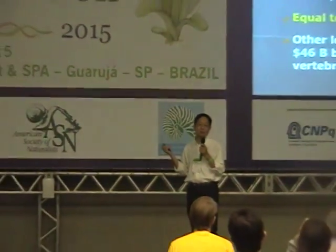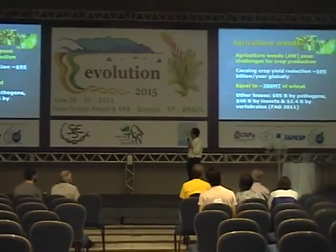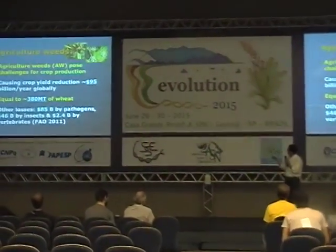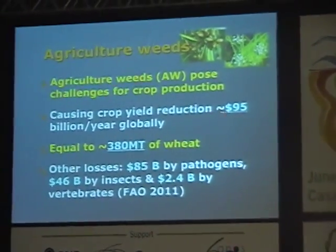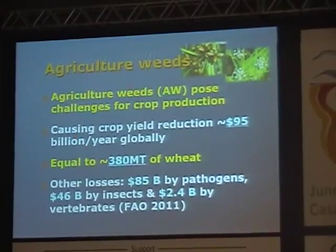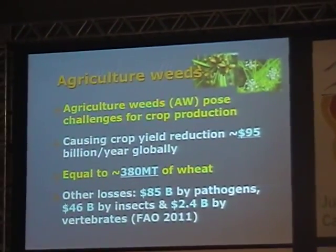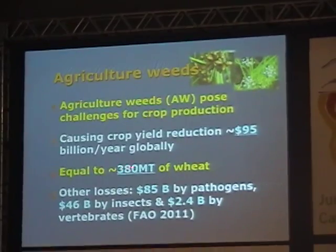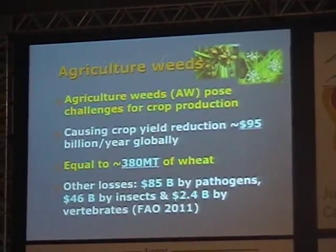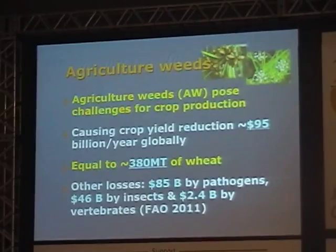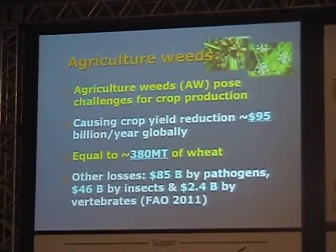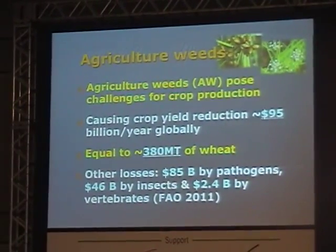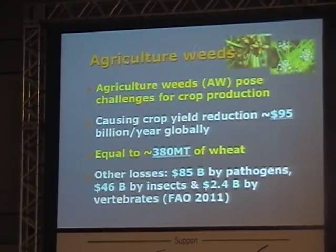Agricultural weeds are really very important — it's a great challenge for agricultural production. By estimation, every year the damage caused by agricultural weeds is about 95 billion dollars. That's equivalent to 308 million tons of wheat lost. So compared to other things like pathogens and insects, the damage from weeds is not as high as those, but weeds are still very impactful.